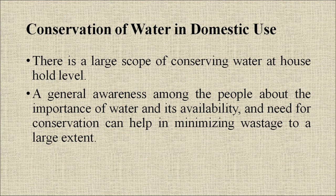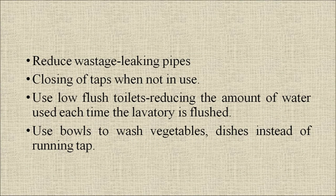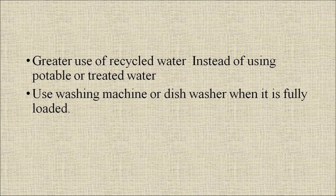There is a large scope for conserving water at the household level. General awareness among people about the importance of water and its availability, and the need for conservation, can help in minimizing wastage to a large extent. Some ways for improving water use efficiency at household level include: reduced wastage or leaking of pipes, closing taps when not in use, use of low-flush toilets, reducing the amount of water used each time the lavatory is flushed, use of bowls to wash vegetables and dishes instead of running tap, greater use of recycled water instead of potable water, and using washing machines or dishwashers only when fully loaded.